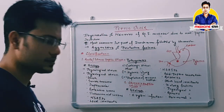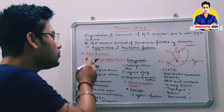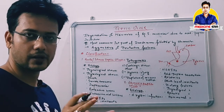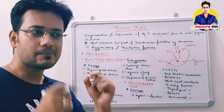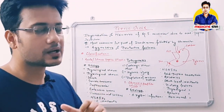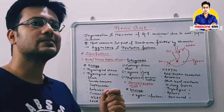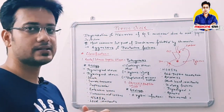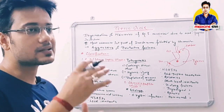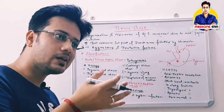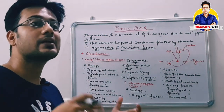Peptic ulcer is classified into two parts: first, acute or stress peptic ulcer; second, chronic peptic ulcer. Acute or stress peptic ulcer mainly occurs in the stomach — in the duodenum it is rare. Acute means the ulcer sustains for a shorter duration, while chronic means it sustains for a longer duration. Etiology means the causes of the disease.